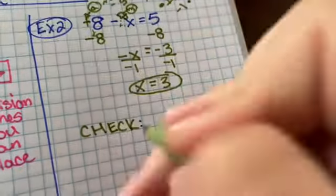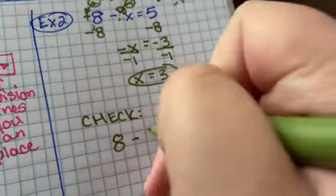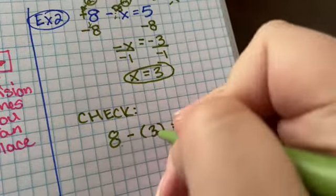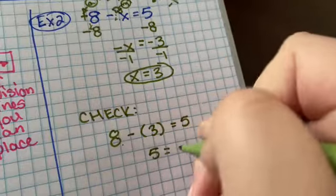And this is an easy check. You just put eight minus minus three equals five. You know that eight minus three equals five, so five equals five.